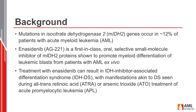Treatment with the IDH2 inhibitor enasidenib can result in an entity called IDH inhibitor-associated differentiation syndrome, IDHDS. This syndrome is similar to and akin to the differentiation syndrome seen during treatment of acute promyelocytic leukemia with all-trans retinoic acid or arsenic trioxide.